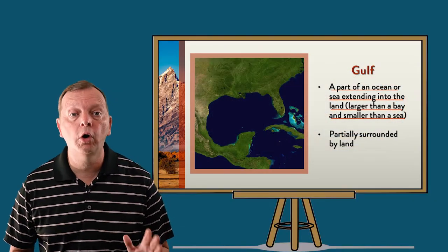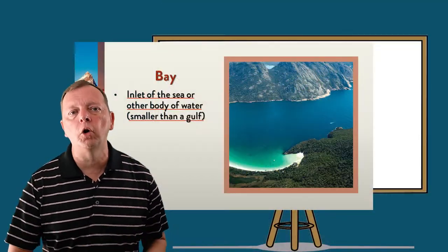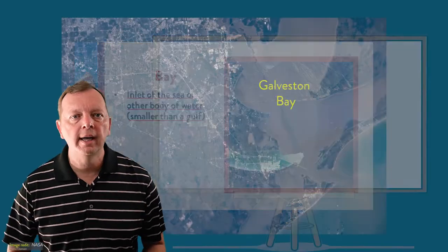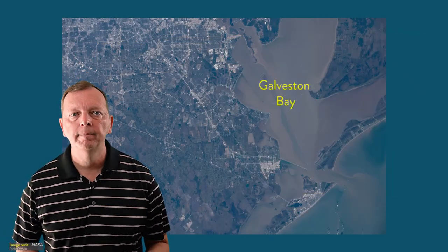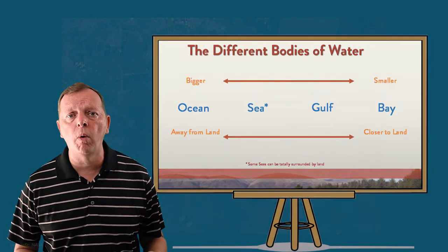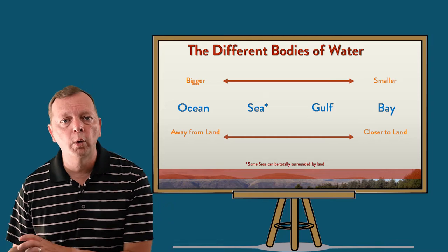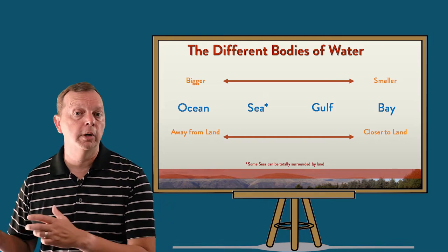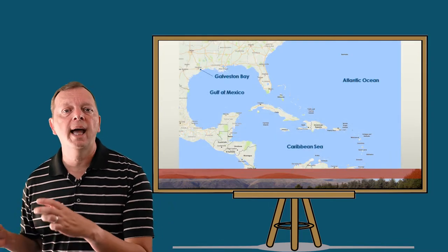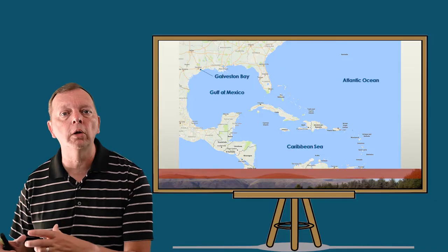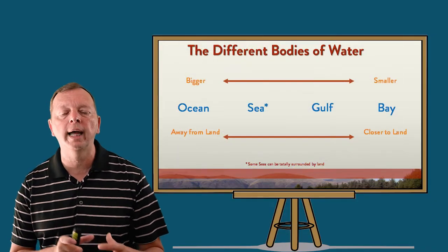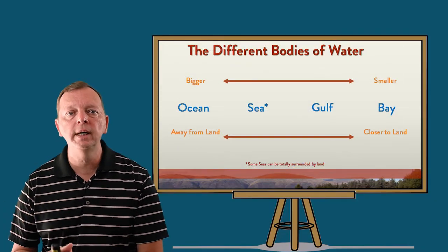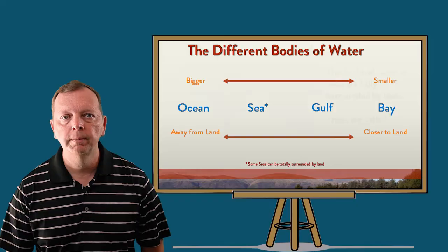Then we get to gulfs, such as the Gulf of Mexico. A gulf is an inlet of the sea almost completely surrounded by land, and a smaller gulf is called a bay, such as Galveston Bay. It's probably best to think of bodies of water as: the further from land and much larger, you have oceans; and as these bodies of water get smaller and closer to land, the oceans become seas, then gulfs, then bays.